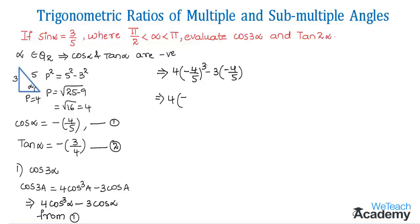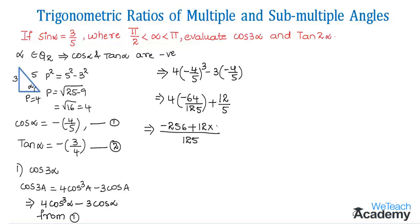Simplifying: 4 × (−64/125) − 3 × (−4/5) = −256/125 + 12/5. Taking LCM as 125: (−256 + 300)/125 = 44/125. So the value of cos 3α = 44/125.